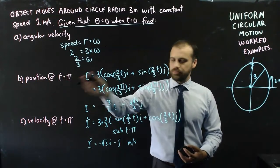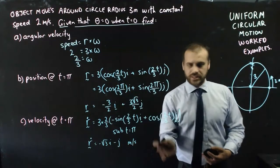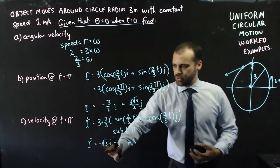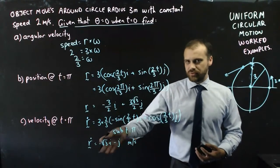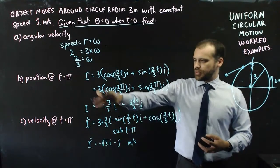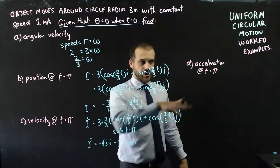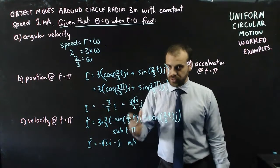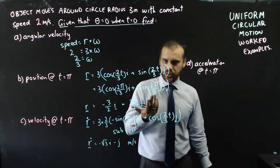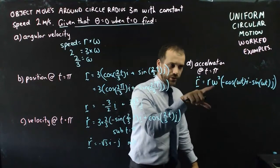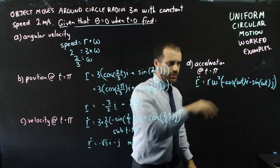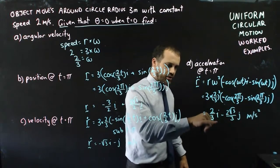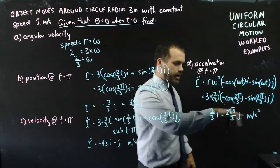At time pi the object is in the second quadrant, and the velocity vector tells us the tangent points slightly further in the negative i direction than the negative j direction — root 3 is about negative 1.4. That's the velocity at t equals pi. For the acceleration at t equals pi, we differentiate again to get the acceleration function, substitute in the radius, omega, and t equals pi, and we get acceleration of 2/3 i minus 2 root 3 over 3 j metres per second squared.